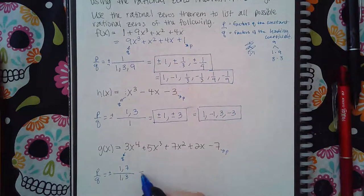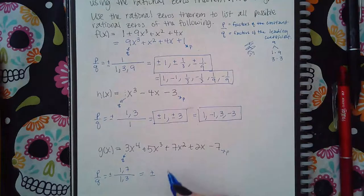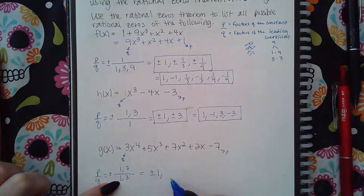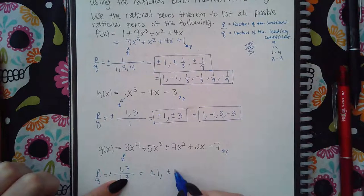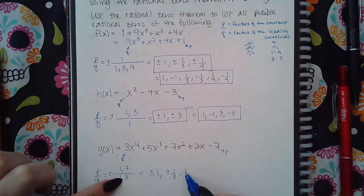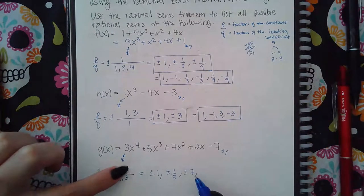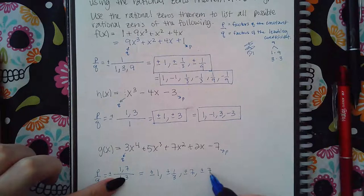Then when we do all of the different combinations, we get 1 over 1, which is 1, 1 over 3, which is 1 third, 7 over 1, which is 7, and then 7 over 3, which is 7 thirds.